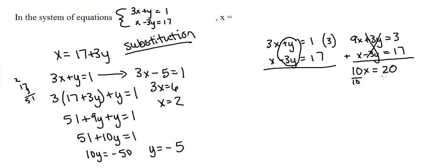Now we're going to add our two numbers and we are going to get 20. So solving for x, we're going to divide both sides by 10 and we are going to get x equals 2. That is our final answer. This is the method of elimination.